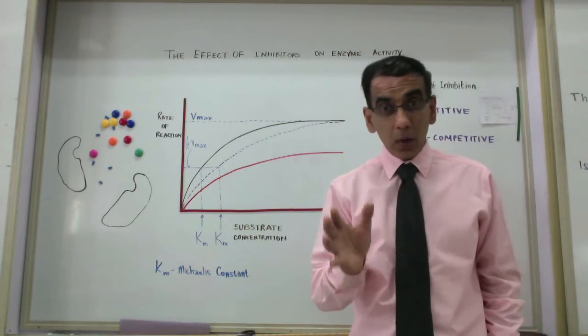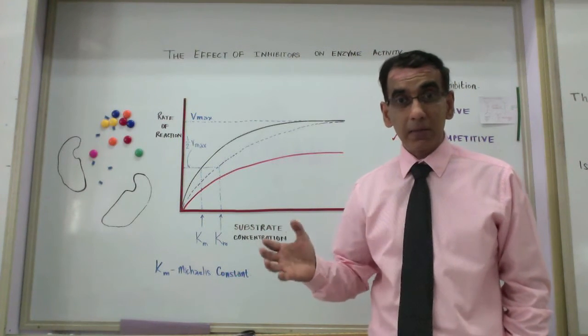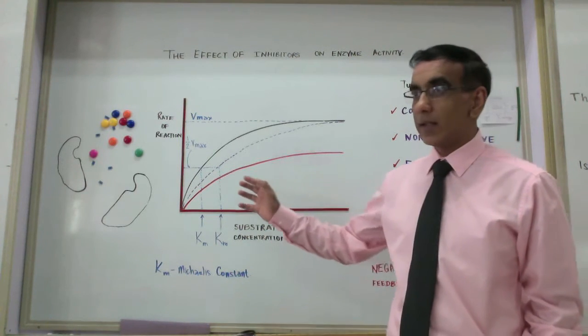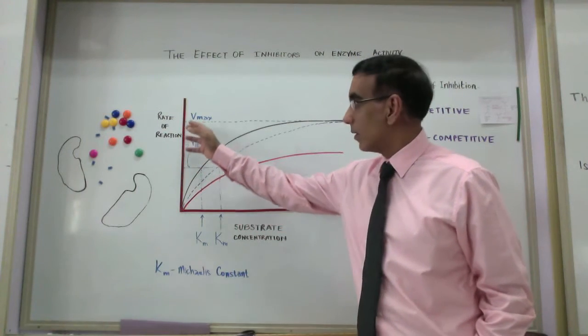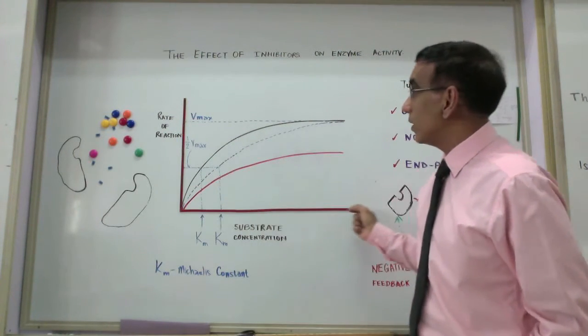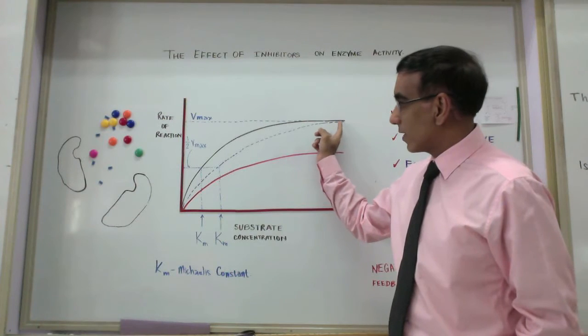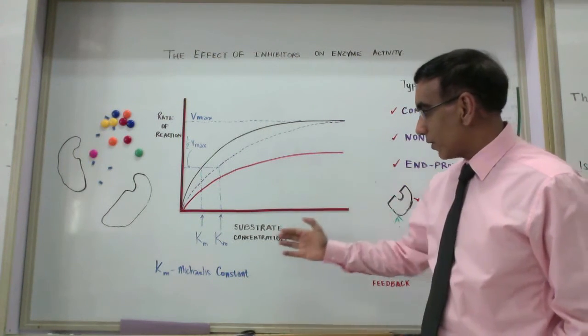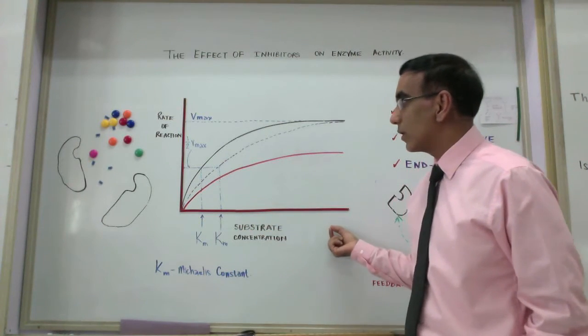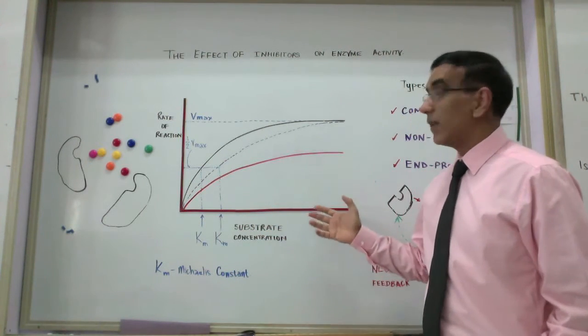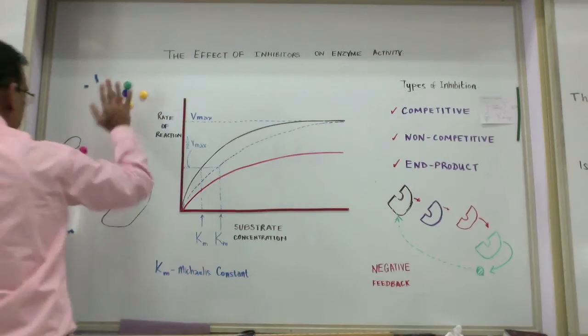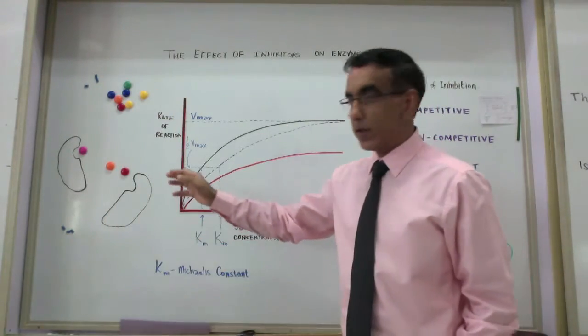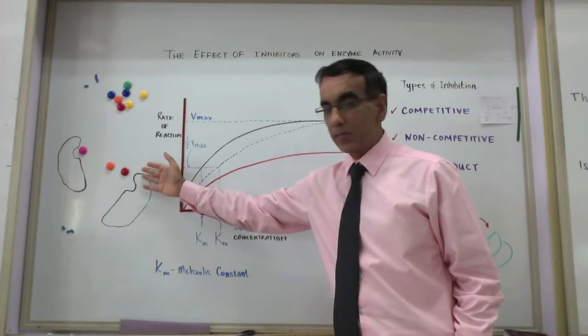Now that we know why we need to study about enzyme inhibition, let's look at the chemistry associated with the process of enzyme inhibition. Let's first consider this black line here, which looks at how changing the substrate concentration affects the rate of an enzyme-catalyzed reaction. When substrate concentrations are relatively low, like you can see here...